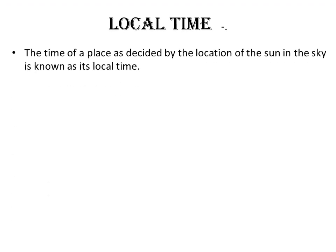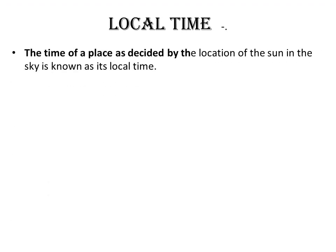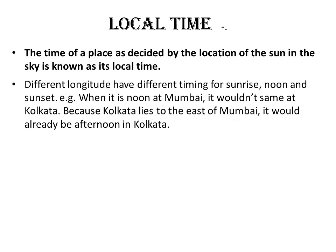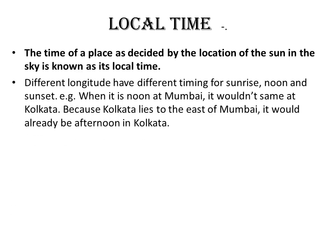Local Time. The time of a place as decided by the location of the sun in the sky is known as its local time. Different longitudes have different timings for sunrise, noon, and sunset.